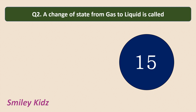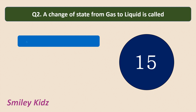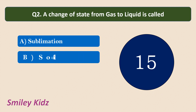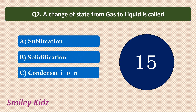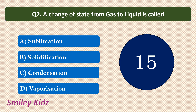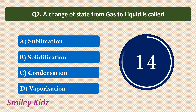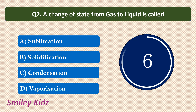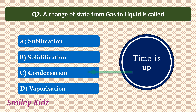Question number 2. A change of state from gas to liquid is called? Your options are Sublimation, Solidification, Condensation, or Vaporization. Your time starts now. Your time is up and the correct answer is Condensation. A change of state from gas to liquid is called Condensation.